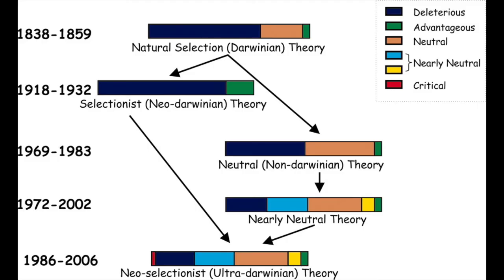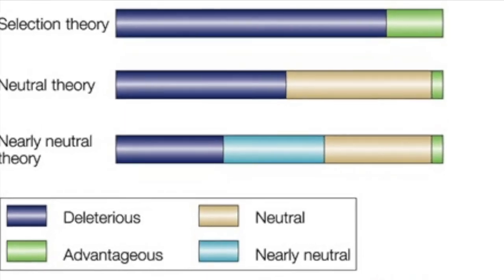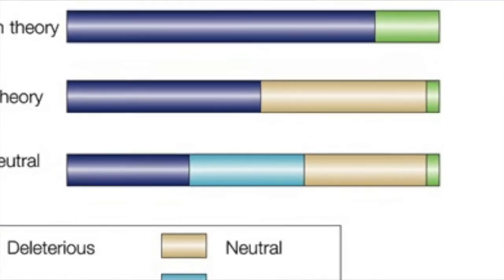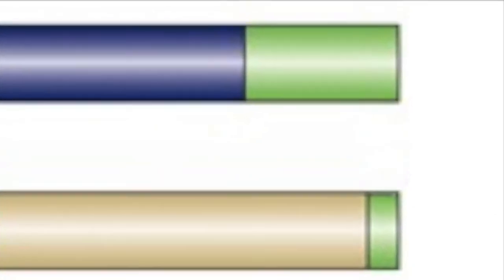Evolutionists have to hold to the selectionist theory — basically that molecular clocks are untrustworthy, either being faster in the past or that many fixations are beneficial. This is contrary to what we actually observe in nature.